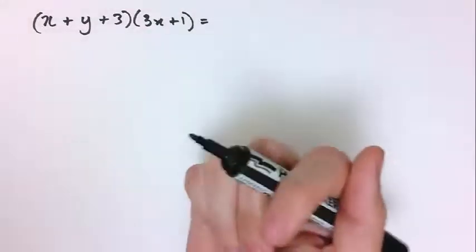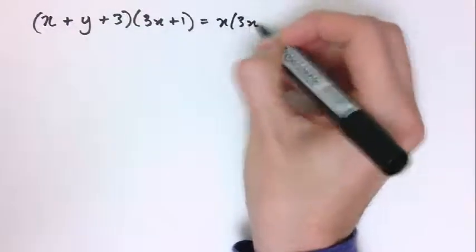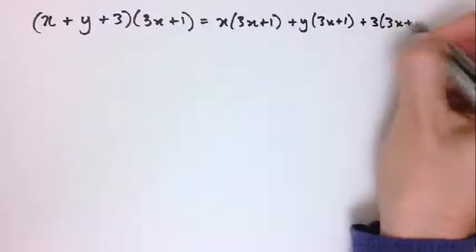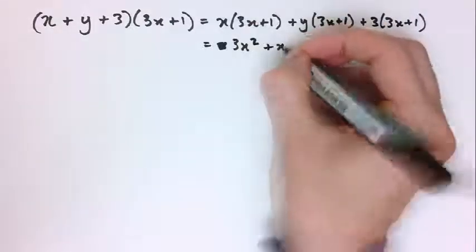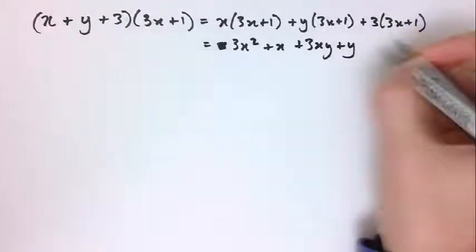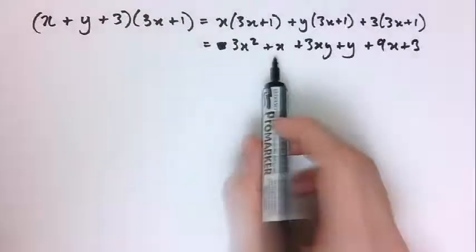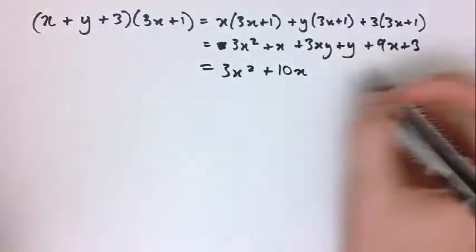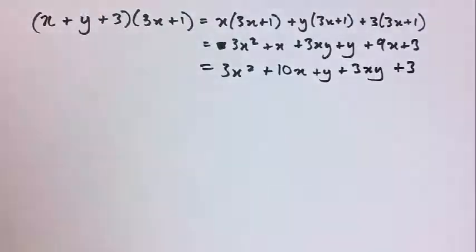There's not much difference when multiplying brackets with more than two terms. For (x + y + 3)(3x + 1): that's x lots of (3x + 1) plus y lots of (3x + 1) plus 3 lots of (3x + 1), giving 3x squared plus x plus 3xy plus y plus 9x plus 3. Combining x and 9x gives 3x squared plus 10x plus y plus 3xy plus 3. Note that the xy term doesn't combine with any other term.